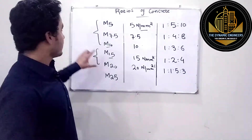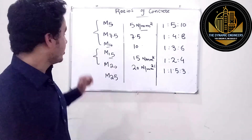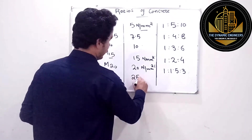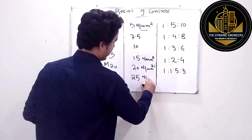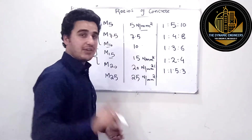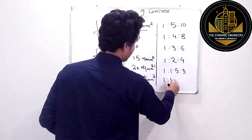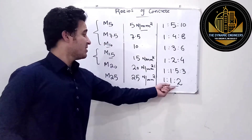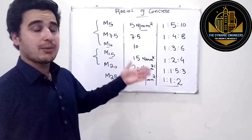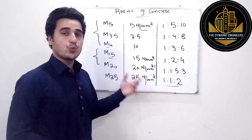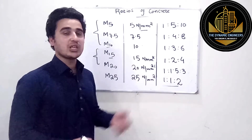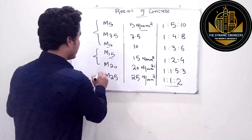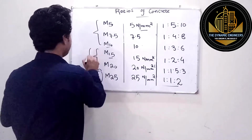The sixth grade, M25, has a strength of 25 Newton per millimeter square and a ratio of 1:1:2 — 1 unit of cement, 1 unit of sand, and 2 units of aggregate. This is the highest concrete grade for which we can directly specify a nominal mix ratio, and it is normally used in columns.